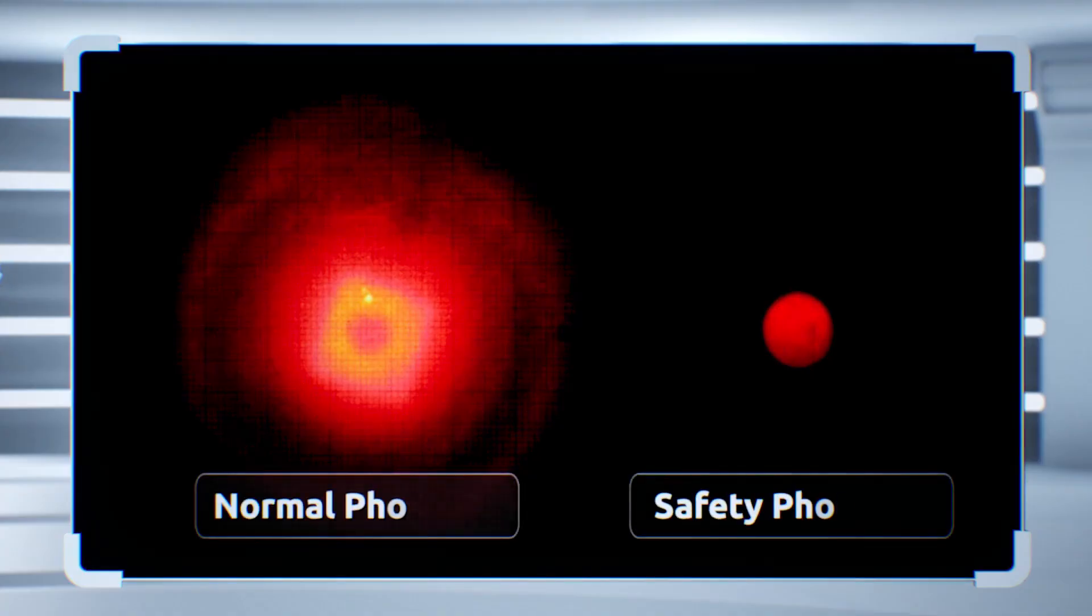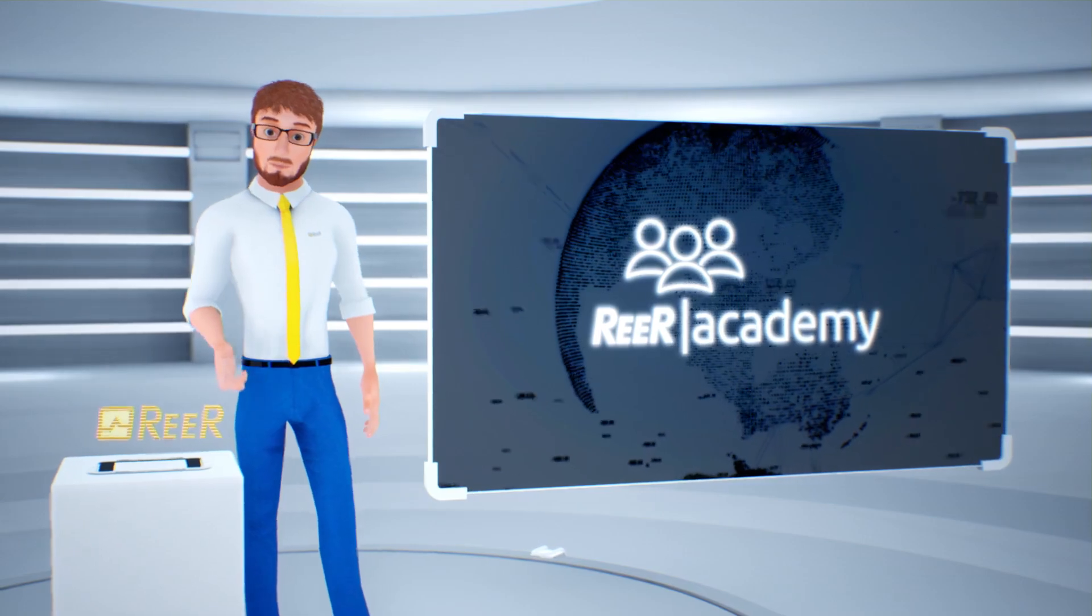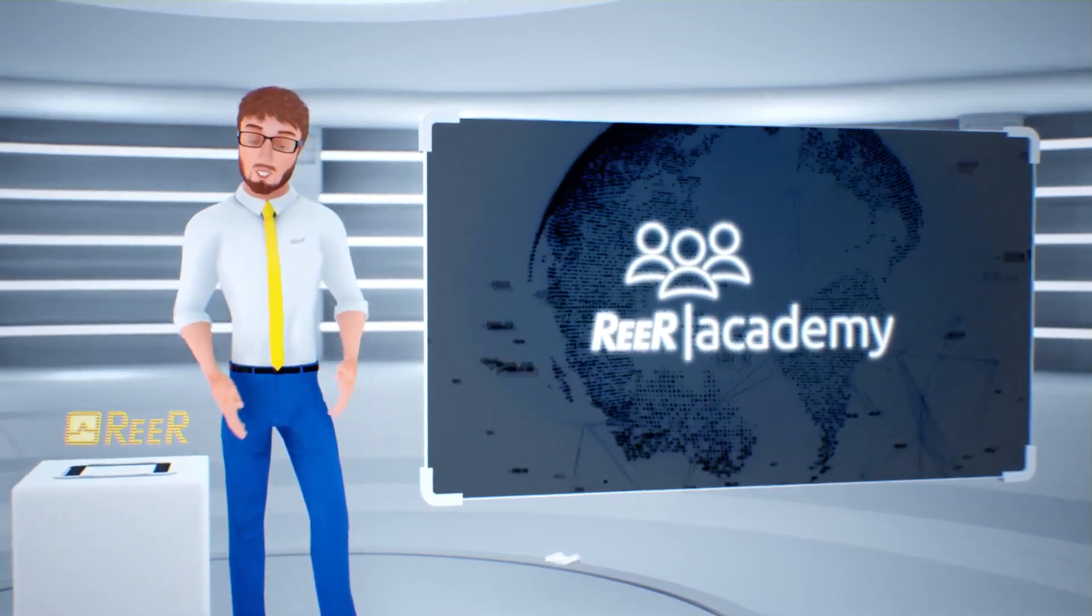Firstly, the light beam must be uniform and circular. The image on the left is from the beam of a normal photocell, while the one on the right is from a safety photocell. This ensures that the beam emitted by the emitter is well defined.